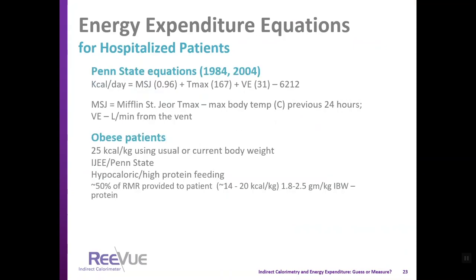Another equation for hospitalized patients is the Penn State equation. For obese patients, three approaches have been recommended: 25 calories per kilogram using actual body weight; 15–20 calories per kilogram using actual body weight; or the Ireton-Jones or Penn State equation. A hypocaloric high-protein feeding approach — giving about 50% of measured RMR calories, roughly 14–20 calories per kilogram — while providing adequate protein using ideal body weight as the factor, has also been used.